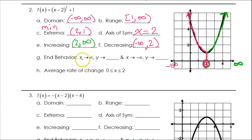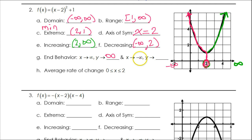End behavior. As x approaches infinity — in other words, as we go to the right — the graph goes up, so that's positive infinity. As x approaches negative infinity — in other words, as we slide to the left — the graph also goes up forever, so that will also be positive infinity.